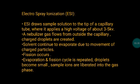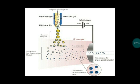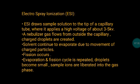ESI draws the sample solution to the tip of a capillary tube where it applies a high voltage of about 3 to 5 kilovolts. It is a type of evaporative ionization technique. A nebulizer gas flows from outside the capillary and charged droplets are created. Through the capillary, sample is injected and at the tip of the capillary high voltage is applied, spreading the sample due to the presence of nebulizer gas, creating charged droplets.